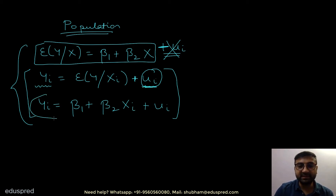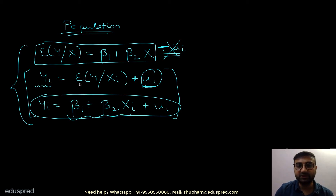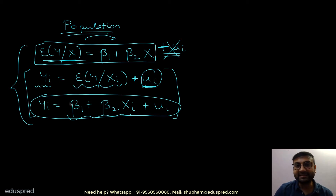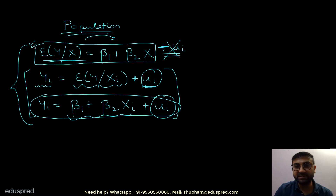The third equation is actually a combination of equation number one and equation number two. You take the relationship from equation one and substitute it into equation two to get equation three. Because equation three is also at an entity level, you have to write the population error term in it as well. So in the population regression line equation, do not add the error term. In the second and third equations, you do have to add the error term.